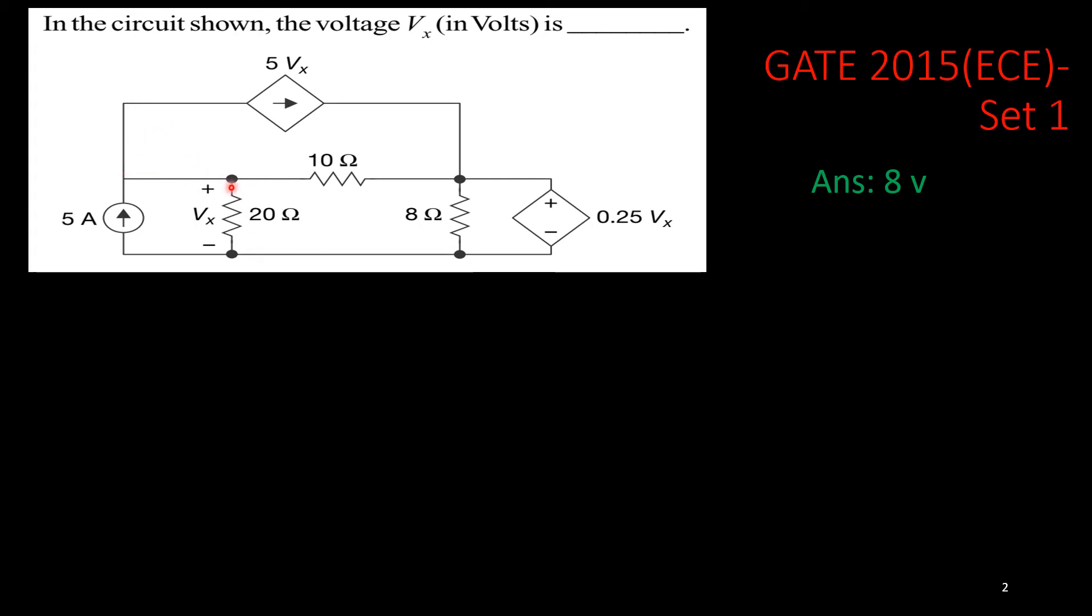I'll redraw the circuit. I'll take one node here only, there you have one 5 ampere current source entering, and from that node only, this 5Vx current source is leaving. And I'll remove this 8 ohm resistance.